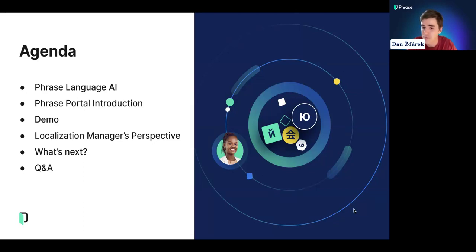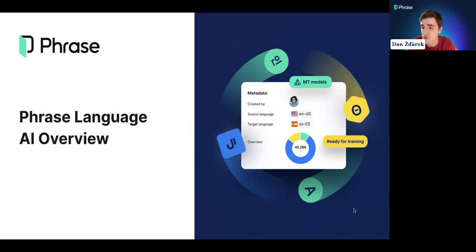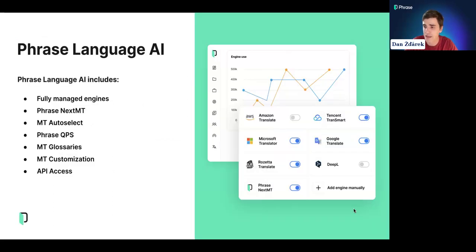I want to present the technology that powers Phrase Portal and many of our innovations throughout the whole Phrase platform — that is Phrase Language AI. Let's do a quick overview of what exactly Phrase Language AI is. It is our set of translation, quality assessment, and MT customization features, available throughout the Phrase platform. There are quite a few core components, including our fully managed engines.